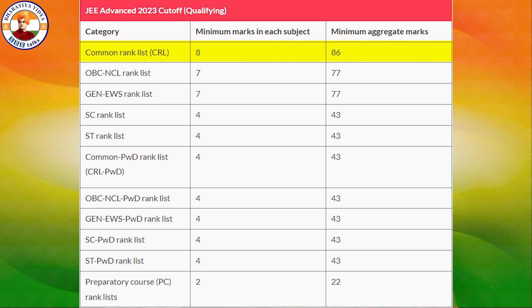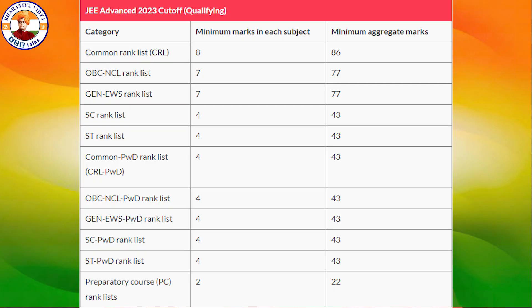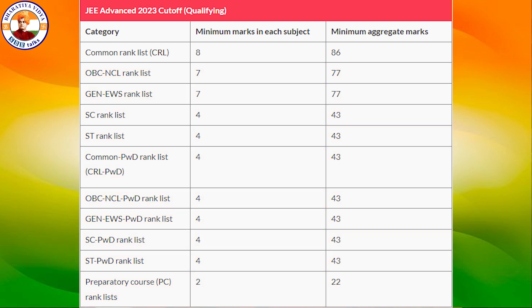If you have any qualifies or rank in the rank list, a JEE Advanced rank is used for counseling. If we get any rank we are ranked — OBC is 7, total 77; EWS is the same; SC is 4th; ST and PwD are the same. You will find your name in the rank list and you will find your scorecards.